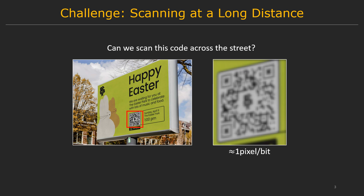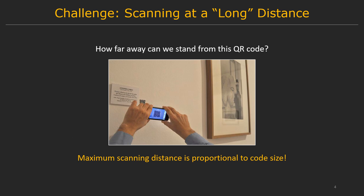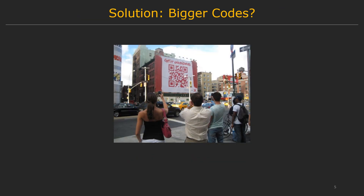It is also important to notice that the definition of 'long distance' depends on the physical size of the QR code. What really matters is how many pixels the code occupies on the camera image. For a very small QR code, you may have to hold your phone very close to it. So how can we make sure codes can be scanned at a long enough distance?